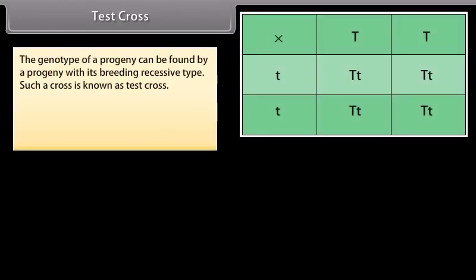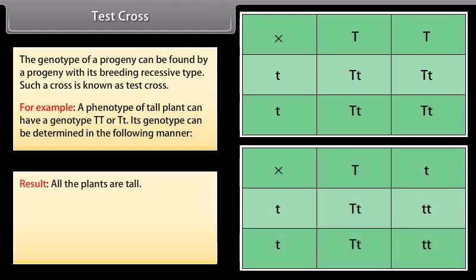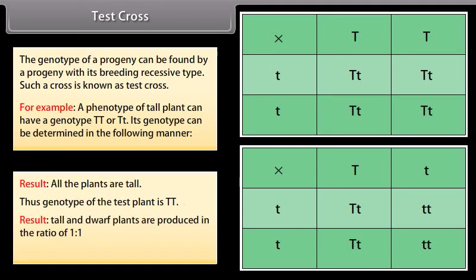Test cross. The genotype of a progeny can be found by crossing it with the homozygous recessive type; such a cross is known as a test cross. For example, a phenotypically tall plant can have genotype TT or Tt. In the first case, all the plants are tall, so the genotype of the test plant is TT. In the second case, tall and dwarf plants are produced in a 1:1 ratio, so the genotype of the test plant is Tt.